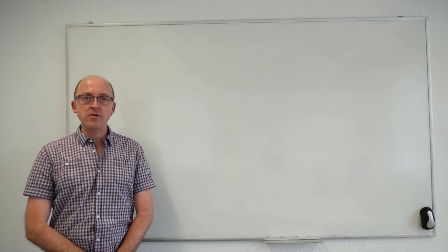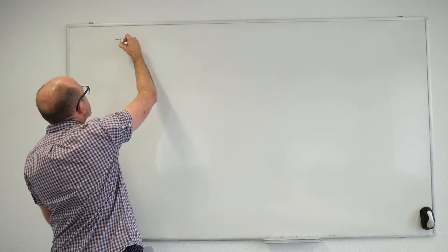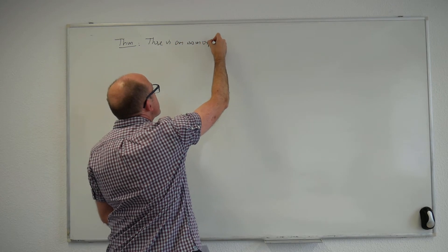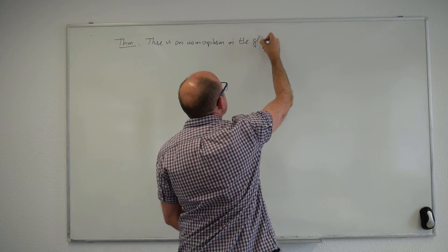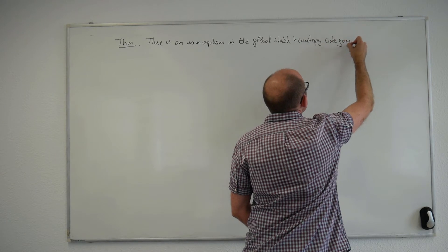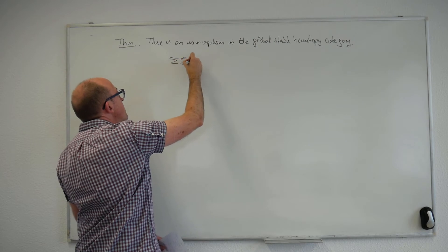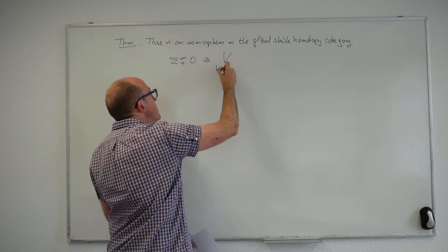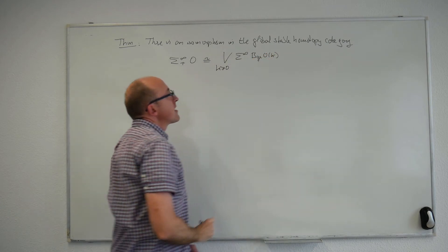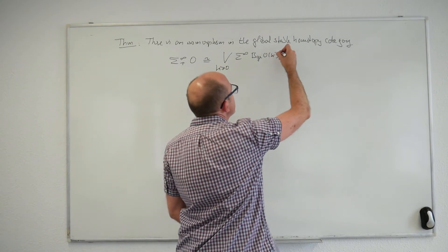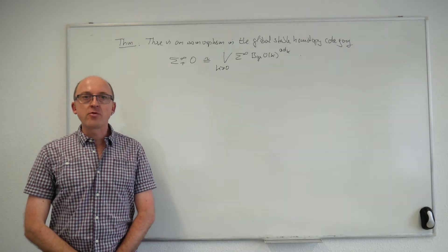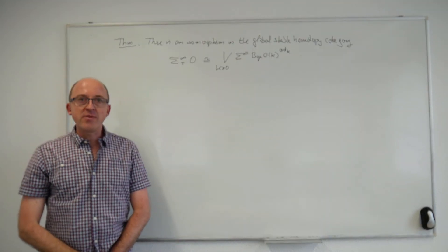With all this notation in place, I can now formulate the stable global splitting of the orthogonal space O. There is an isomorphism in the global stable homotopy category between the unreduced suspension spectrum of the orthogonal space O and the wedge over K ≥ 0 of the suspension spectra of the global Thom spaces given by the global classifying spaces of O(K) associated to the adjoint representation of K. The actual statement is slightly stronger: the proof will provide explicit maps giving this splitting.